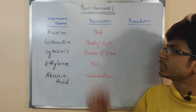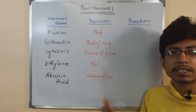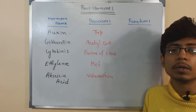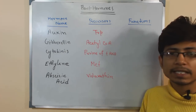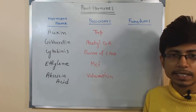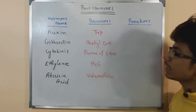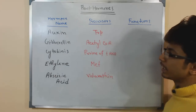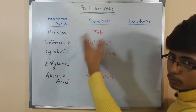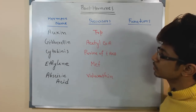Auxin can also be synthesized chemically; these are called synthetic auxins. Examples of synthetic auxins are naphthalene acetic acid (NAA) and methoxy acetic acid. Now, the second hormone is gibberellin. Auxin helps in growth generally, and gibberellin is the second hormone which is also important.